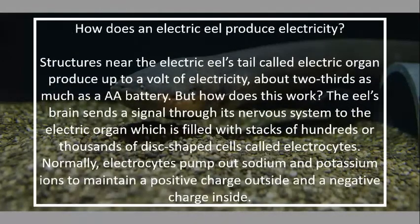How does an electric eel produce electricity? Structures near the electric eel's cells called electric organs can produce up to a high voltage — about two-thirds as much as a double-A battery. The eel's brain sends a signal through its nervous system to the electric organ, which is filled with stacks of hundreds of thousands of disc-shaped cells called electrocytes. Normally, electrocytes pump out sodium and potassium ions to maintain a positive charge outside and a negative charge inside.